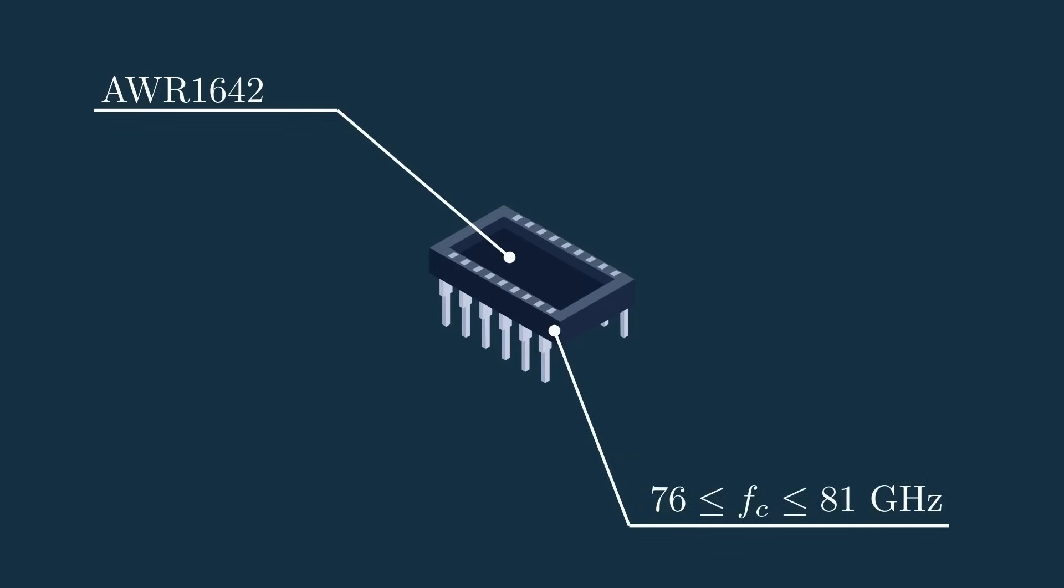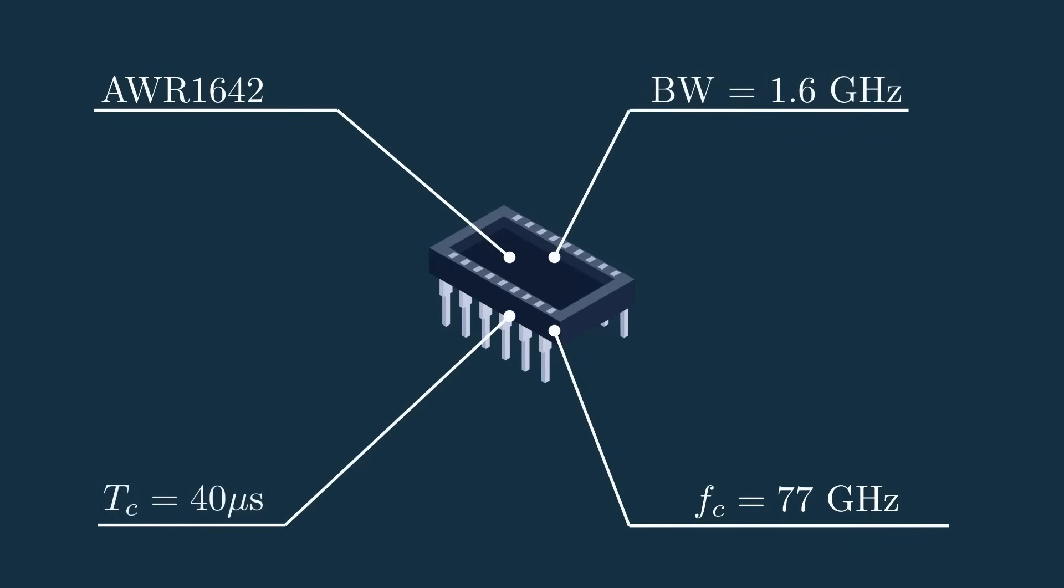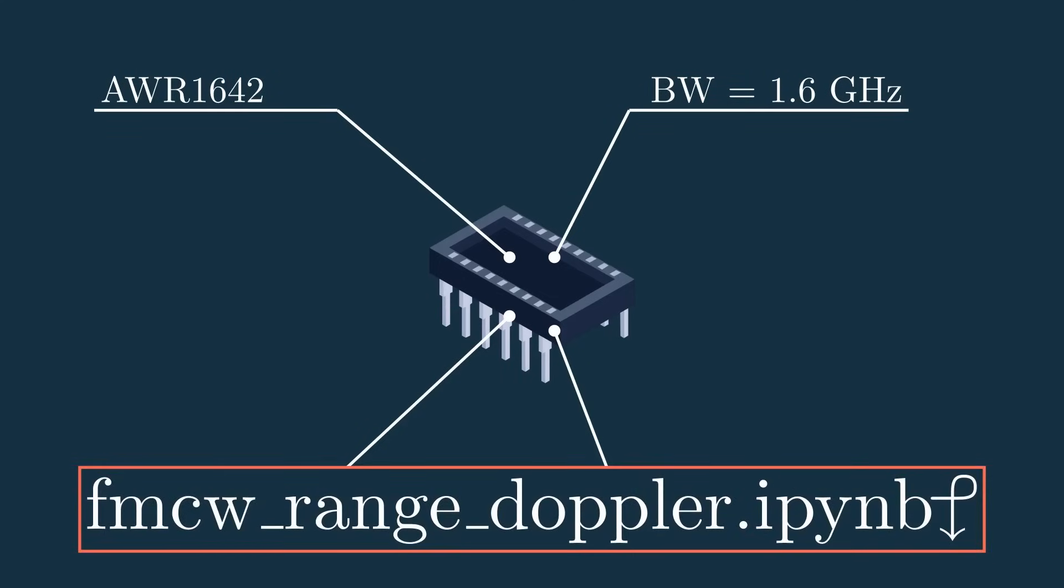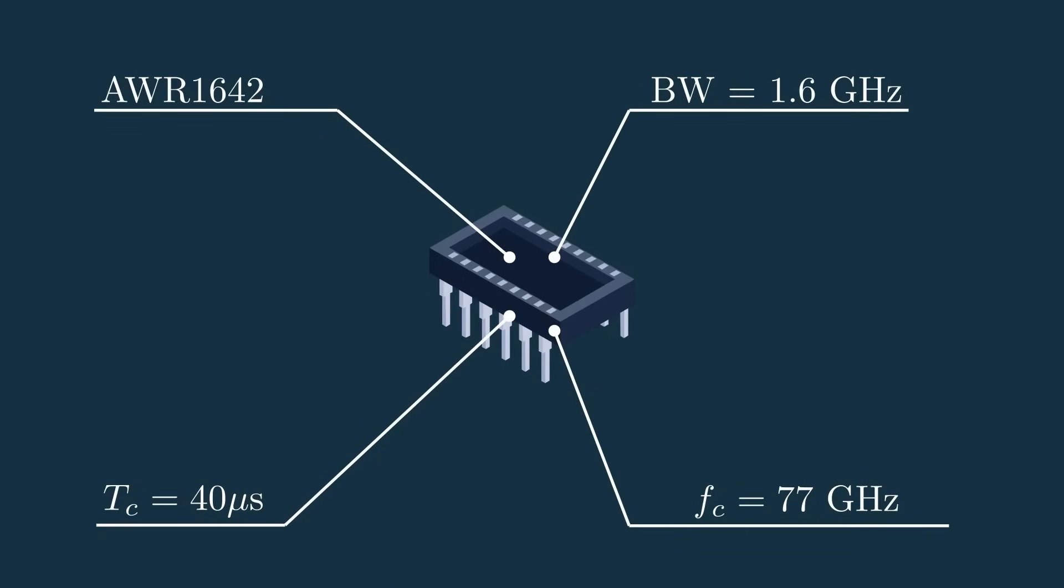And this may be more clear if we take a look at an actual system. So let's pull in the AWR1642, which is an integrated automotive radar chip from Texas Instruments. Not sponsored by the way, just a really cool chip. This thing can transmit a signal centered around 76 to 81 GHz. For this I'll pick 77 GHz. Then it can ramp over large bandwidths over a chirp time. For this I'll choose 1.6 GHz over 40 microseconds. Don't forget that you can play around with these values in the notebook in the description.